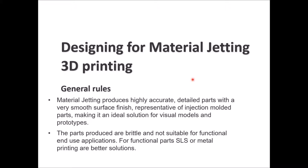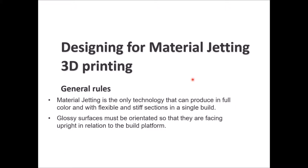General rules to summarize: material jetting produces highly accurate parts with detailed features and a smooth surface finish. It is an ideal solution for visual models and prototypes. Parts are considered brittle and not suitable for functional applications — for functional parts, SLS or metal printing are better solutions. Material jetting is the only technology that can give you full color with flexible and stiff sections in a single build. Glossy surfaces must be oriented facing upright relative to the build platform for a successful print.